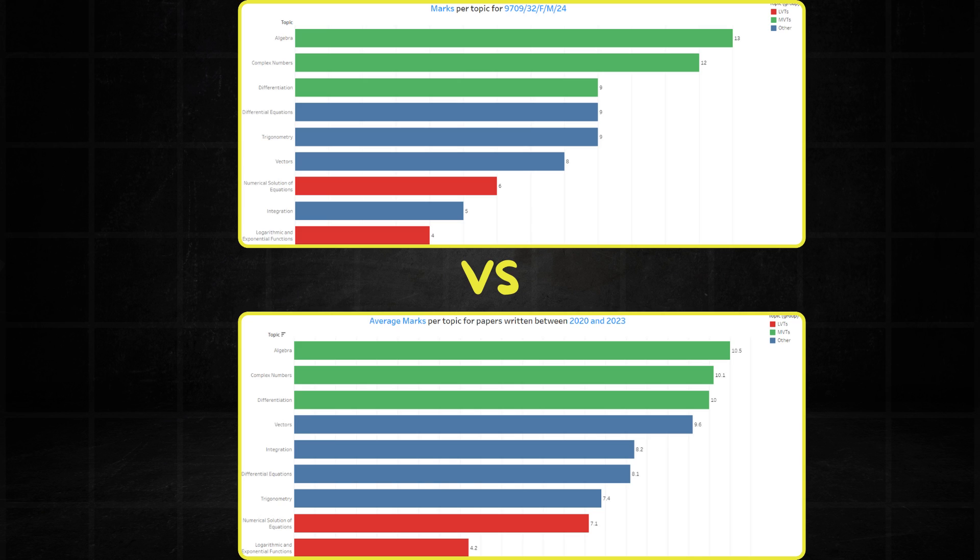Algebra, complex numbers and differentiation make up the top 3 in the February-March paper, which is the exact same top 3 over the past 4 years. And at the bottom end, we have numerical solutions, integration and logarithms. Apart from integration, this is pretty much consistent with the data over the last 4 years. So what could this mean for the May-June series? Let's analyze the February-March paper to find out.